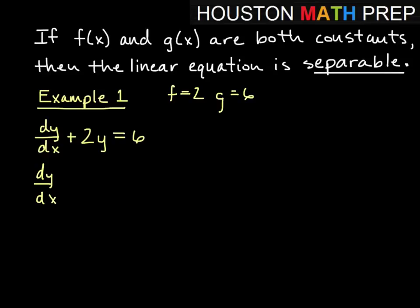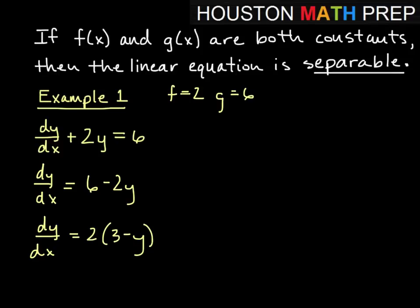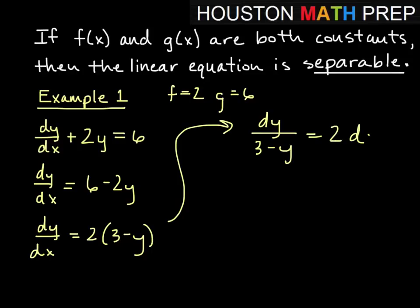To separate it, we subtract the second term from both sides to get dy/dx equals 6 minus 2y, then factor out a 2 to get 2 times (3 minus y). Rearranging gives dy over (3 minus y) equals 2 dx. Integrating both sides gives negative ln|3 minus y| equals 2x plus c, and we could keep going. So if f and g are both constants, you could do it as a separable equation, which may be preferable.